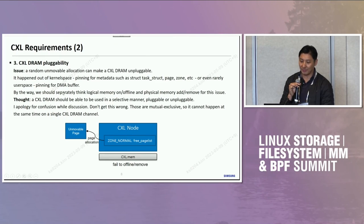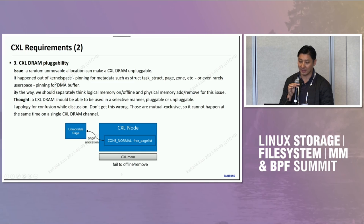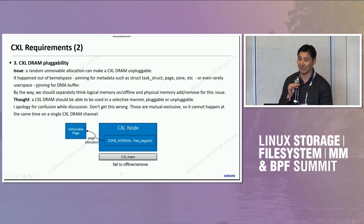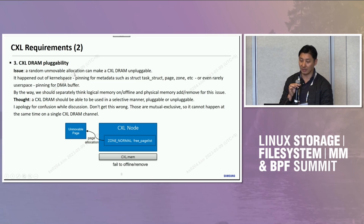I think we all agree that zone_normal is not sufficient to handle CXL memory. We addressed a new zone, but probably zone_normal combined with a zone_preferred_normal concept is enough to handle the pluggability issue. However, there are other requirements we have, so we came to address a new zone. Our thought is that CXL DRAM should be usable in a selective manner — pluggable or unpluggable — and that the current context should be able to determine it, meaning the zone level should not confine it. The pluggable and unpluggable states are mutually exclusive and cannot happen at the same time on a single CXL DRAM channel.